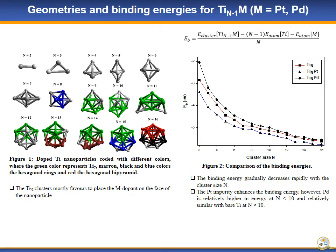Figure 2 reveals that the binding energy for all dopants decreases with cluster size. However, palladium dopant is observed to have a relatively higher binding energy than the pure titanium clusters and the platinum-doped titanium particles.